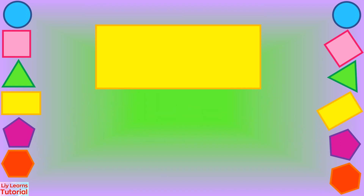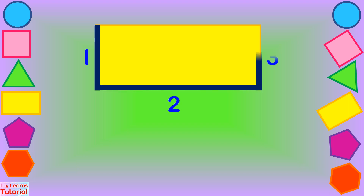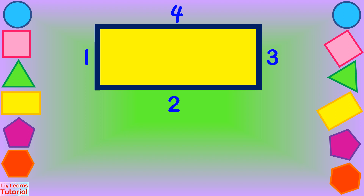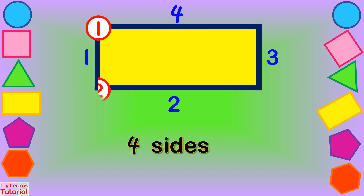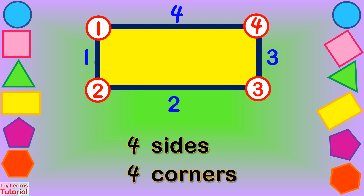Let's count the sides: one, two, three, four — four sides. Let's count the corners: one, two, three, four — four corners.